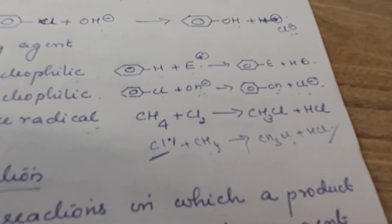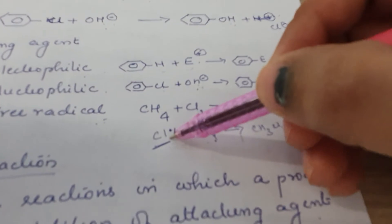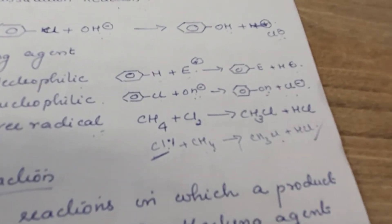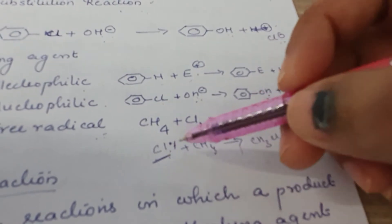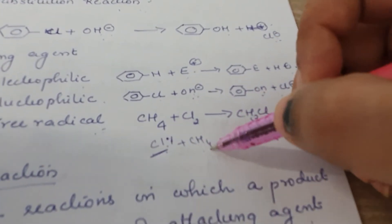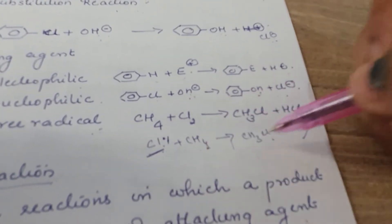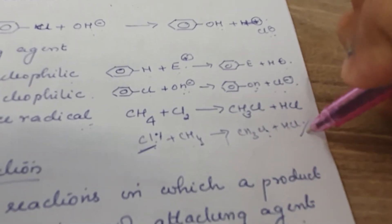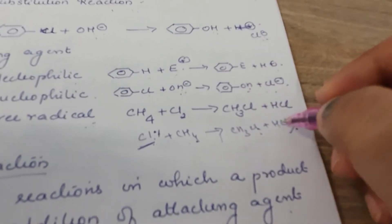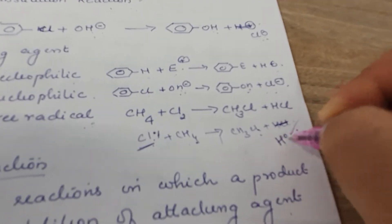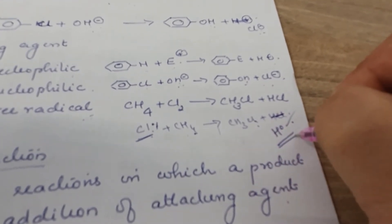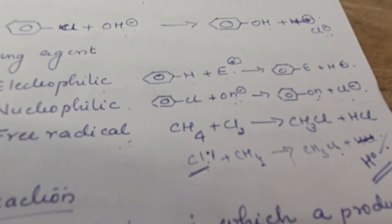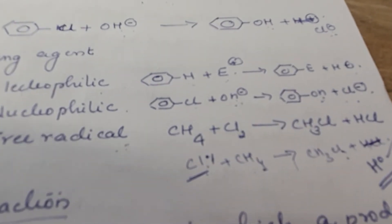In free radical substitution, the attacking species is a free radical — a molecule with one unpaired electron. The free radical attacks and a bond is formed while another breaks homolytically. A hydrogen free radical may develop and that is free radical substitution. Substitution means one group is substituted by another group.